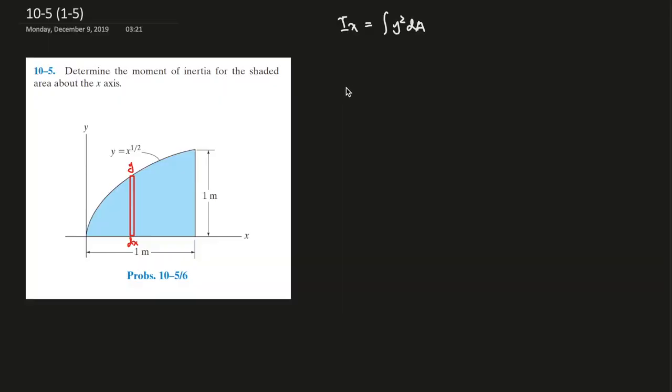Question 5 says determine the moment of inertia of the shaded area about the x-axis. So that means we're going to times the y-square.